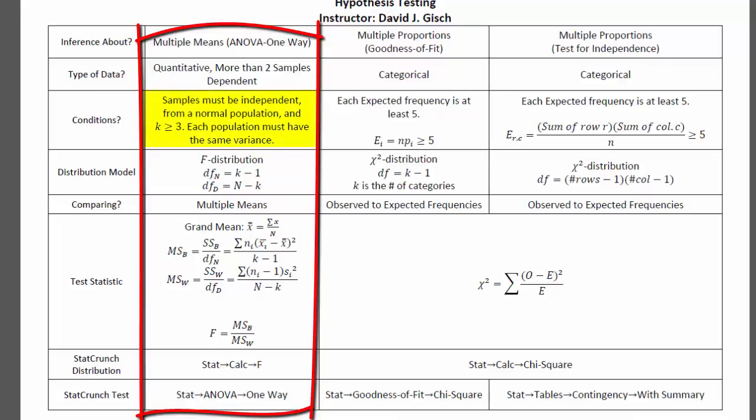Also always check the conditions. Samples must be independent from normal populations. And the number of categories needs to be three or greater. And each population must have the same variance. So in this scenario, I don't think it explicitly said all that, but we're just going to assume that to be able to do the problem.